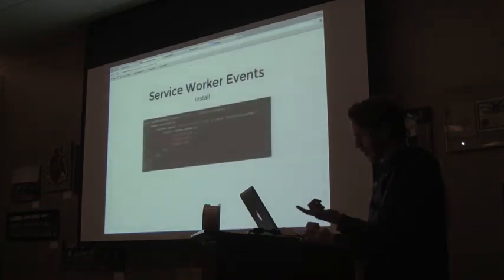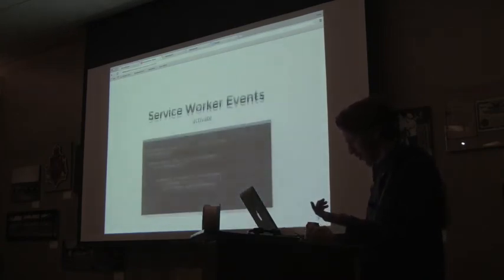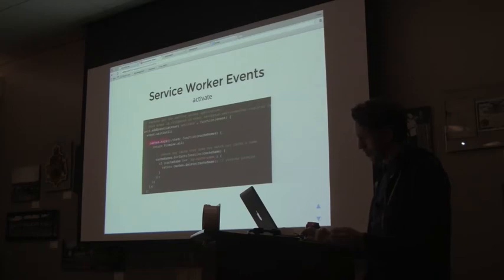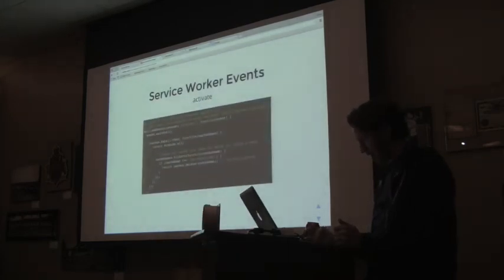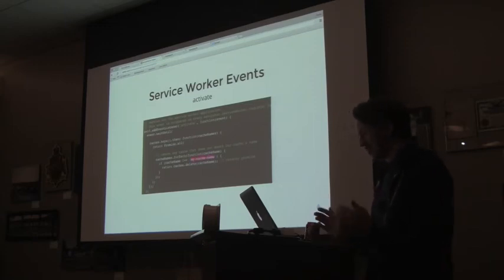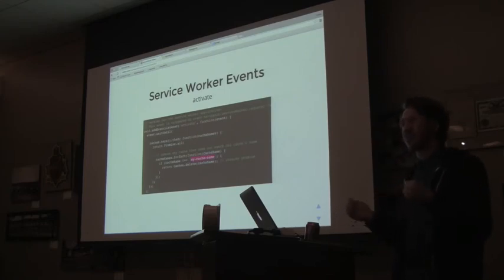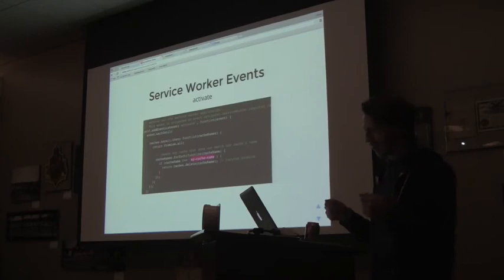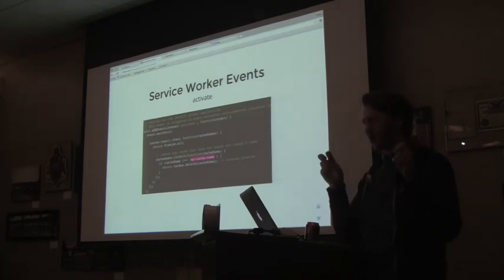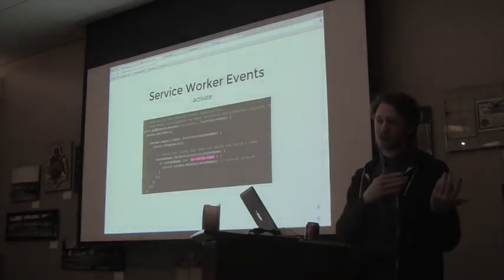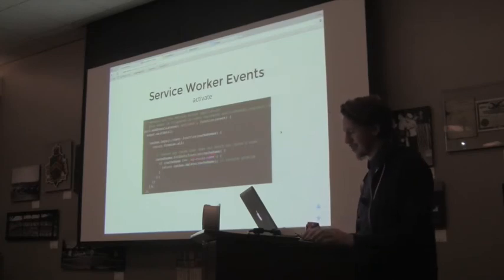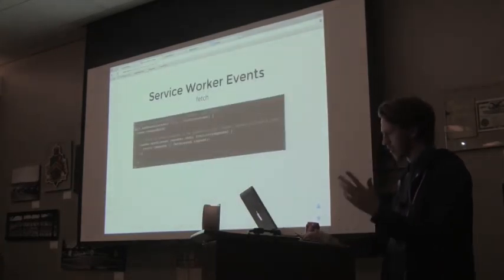What I'm doing here is grabbing all the keys that are in the cache. Then we create a promise that checks to see if any caches in there are not your current cache, and if so, deletes them. So if you go from cache version one to cache version two, you delete cache version one and install cache version two. That's the activate method — it's for migrating versions.